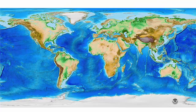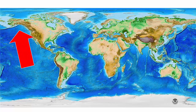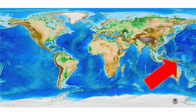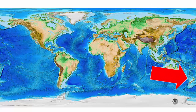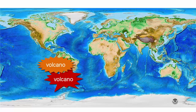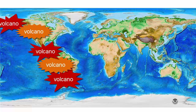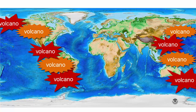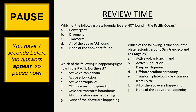If we continue around the Ring of Fire, we also see a number of ocean-ocean convergent plate boundaries in the western Pacific, most notably in Japan, the Philippines, and New Zealand. These areas are rocked by large earthquakes and explosive volcanic eruptions, making them very dynamic places to live.